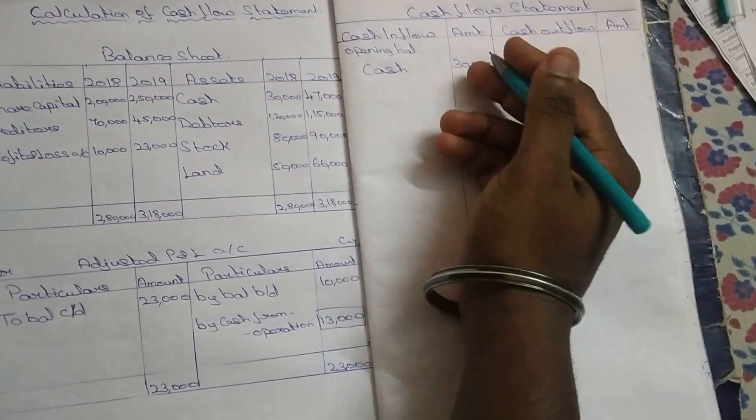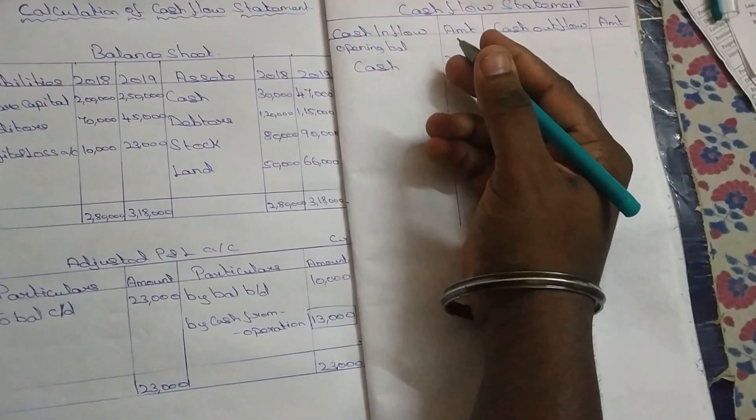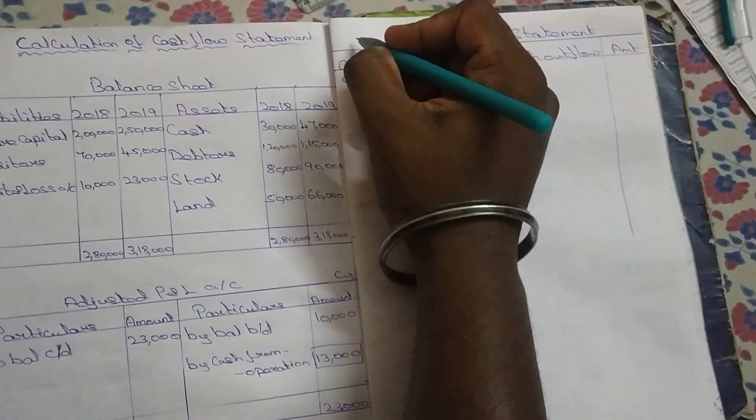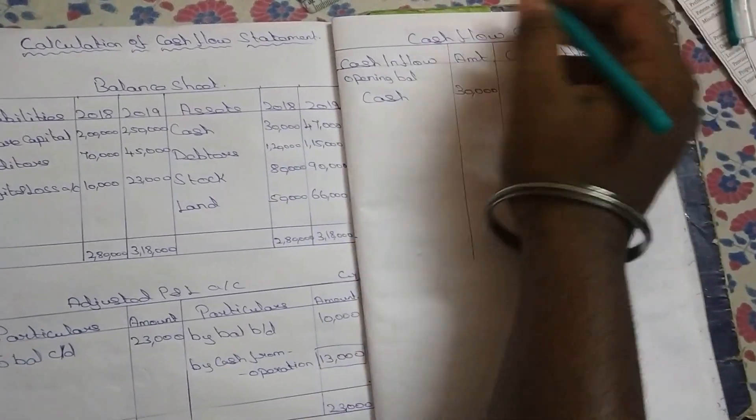You can use the current asset decrease and current liability increase. Let's go to the cash flow statement.